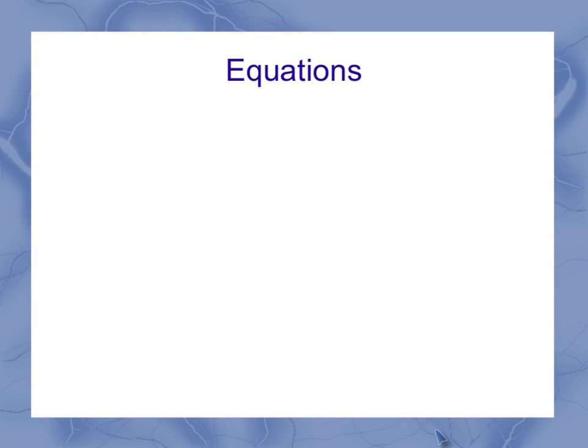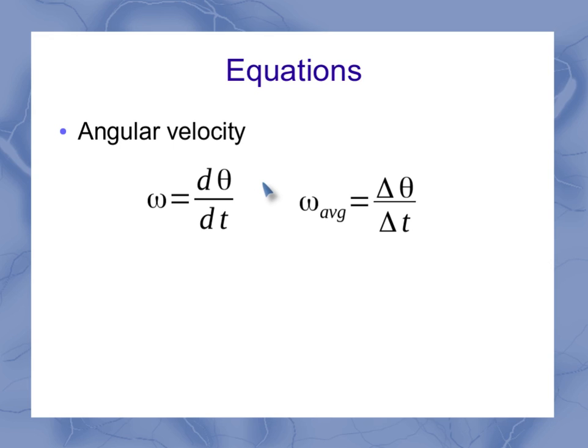Now for our equations, starting with angular velocity. Just like we did with our regular velocities, we recognize that that rate of change is done by our derivative. So this is the derivative with respect to time of the angular position, or dθ/dt for short. If I only care about the average, I can use the delta form of this equation.